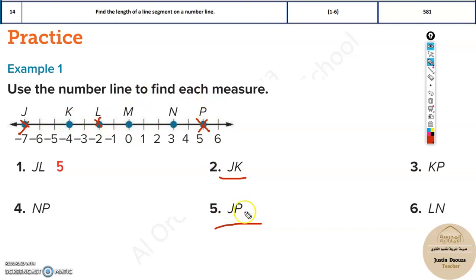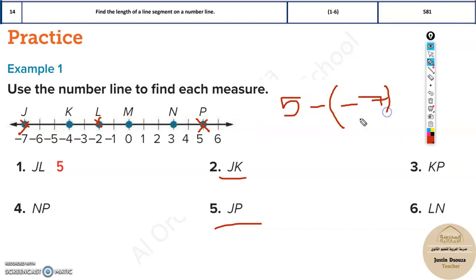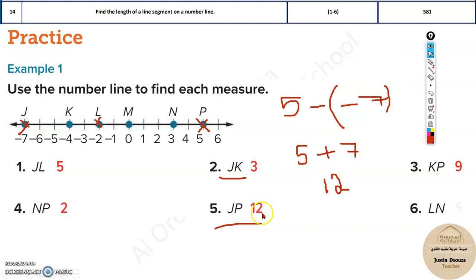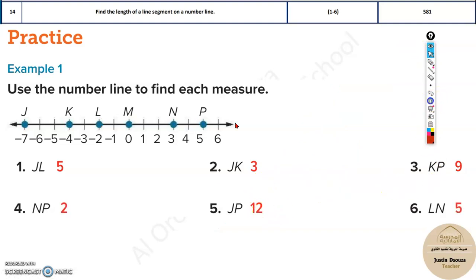What you need to do is take the second point — that is P, which is five — and subtract the initial point, which is negative seven. So the distance between J and P would be five minus negative seven; minus times minus becomes plus seven, so the answer would be twelve. That's how we easily solve it. If it's very small, like J to K, you can easily count it: one, two, three.